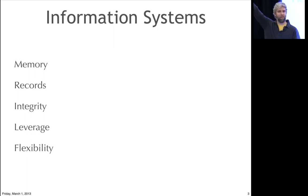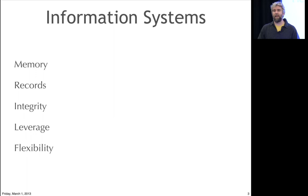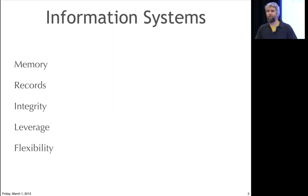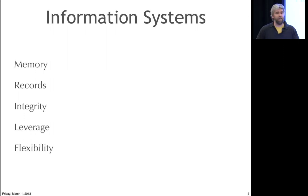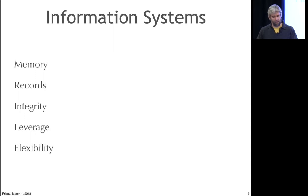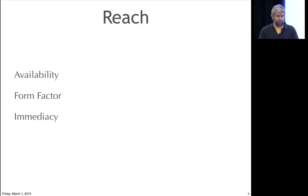A great example of where systems get nasty: 'This used to be batch-oriented and we'd like it to be real-time now.' Building a system that has memory, good records with integrity, leverage, and flexibility in some pleasing proportion is a big challenge. And it actually gets worse because our users have absurd expectations about the reach of systems.